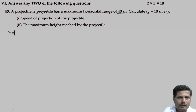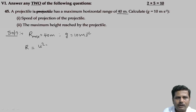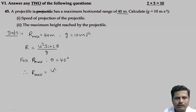The given data: maximum horizontal range R equals 40 meters, acceleration due to gravity g equals 10 meters per second squared. We know that the range of a projectile equals u squared sine 2-theta divided by g. For maximum range, theta should be 45 degrees. Therefore, R maximum equals u squared divided by g. Making u the subject: u equals square root of R maximum into g.